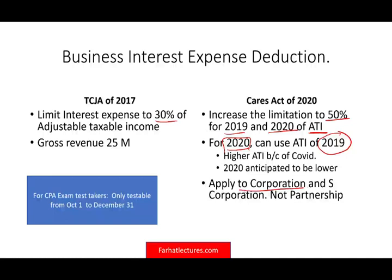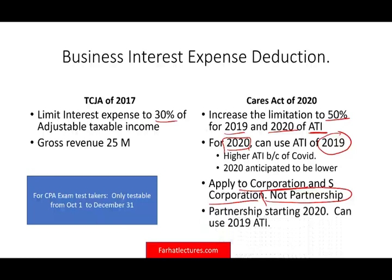This applies to regular corporations and S corporations — it does not apply to partnerships for 2019. Partnerships can use this rule starting in 2020. So for 2020, if they didn't have much adjusted taxable income, they could use their 2019 adjusted taxable income. But for 2019, partnerships cannot file using the 50% deduction.